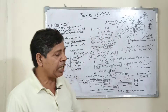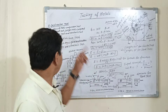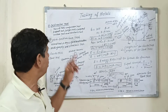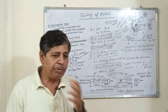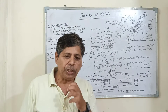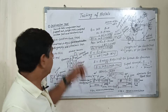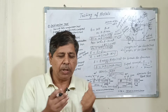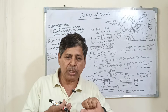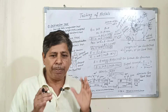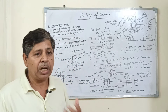The testing of materials are generally two types. Number one is destructive test. Destructive tests are those in which force is required to test the material — like tensile test, compressive test, torsion test, impact test, creep test, fatigue test, and hardness test.